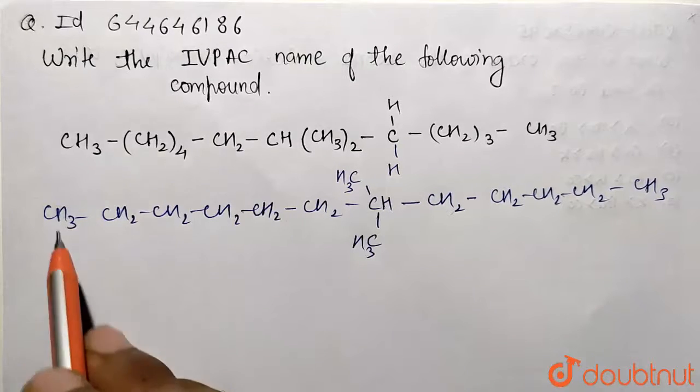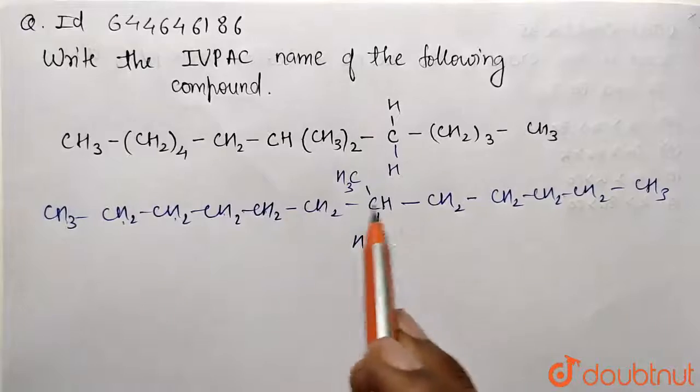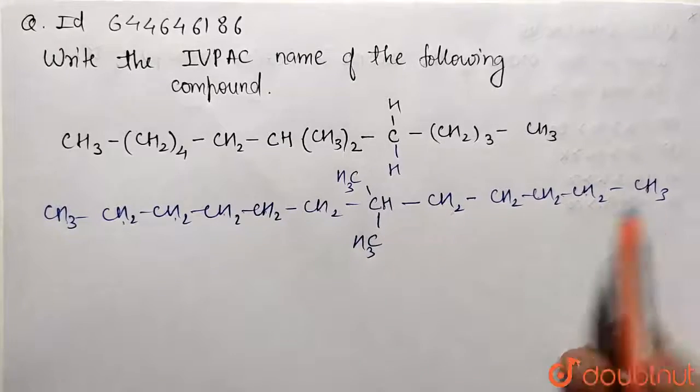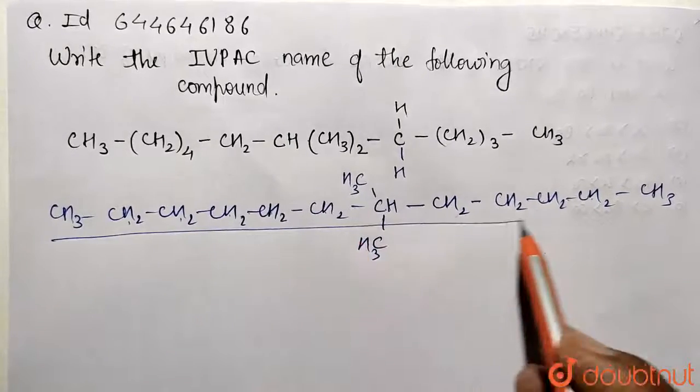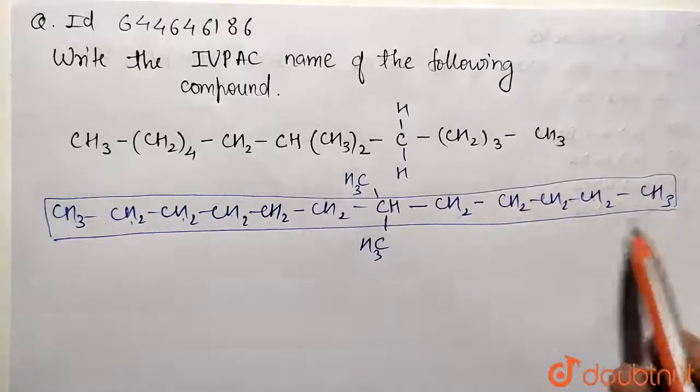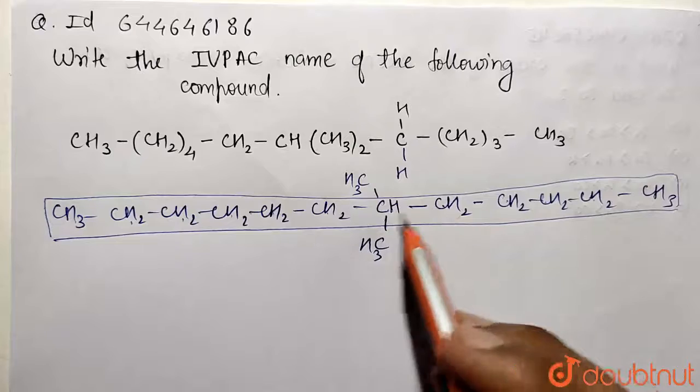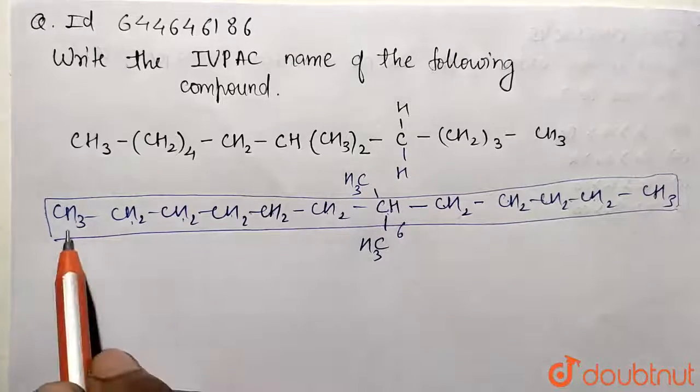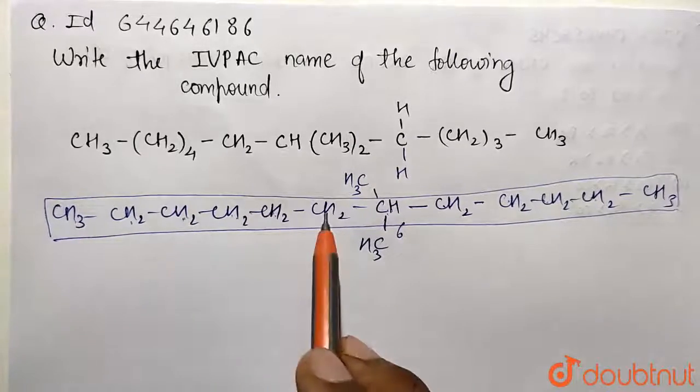This is the molecule: counting one, two, three, four, five, six, seven, eight, nine, ten, eleven, twelve carbons. This 12-carbon chain is the longest chain. We need to determine numbering from which side.